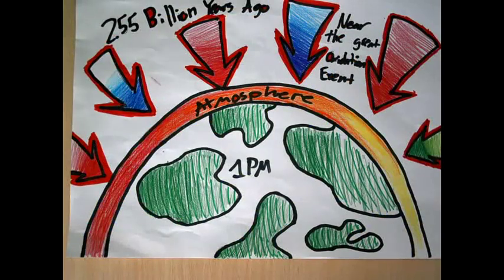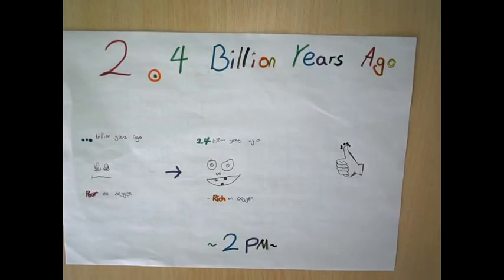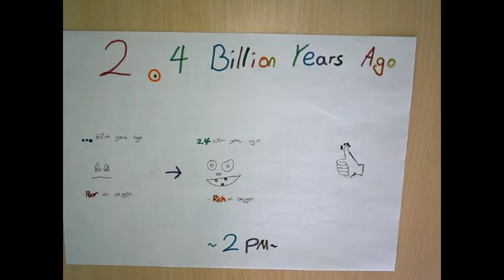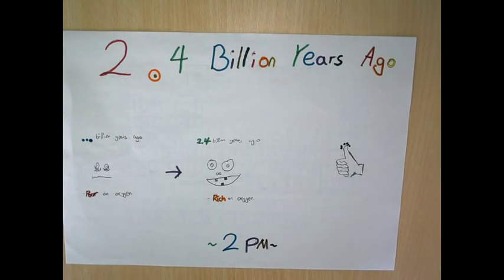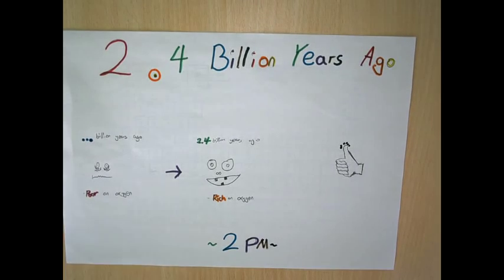Around 2.5 billion years ago, at 1 p.m., this was near the great oxidation event, when the Earth gets its oxygen. What was once an oxygen-poor world became oxygen-rich, which opened the door to the evolution of high-energy lifeforms like animals. Did you know that there are still organisms alive today that don't need oxygen at all?